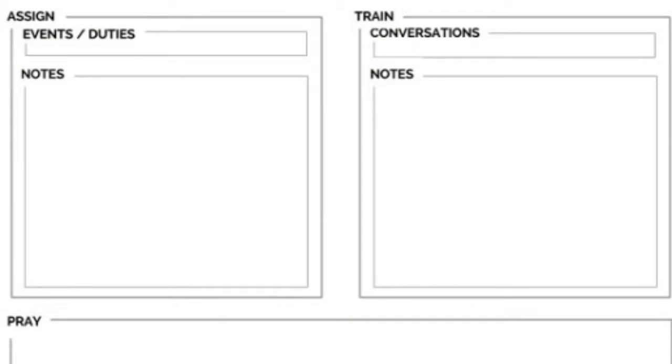The fourth box is Train. Groups that are really going to take off will spend some time in each team meeting training. Train your co-leaders, starting with basic series like Foundations, Mentor Training, and Small Group Training. Once everyone has been through those, you can choose one or two conversations per meeting from our Small Group Resources page, which has dozens of great training conversations about how to do small groups and mentoring better — choose what fits the needs of your team.